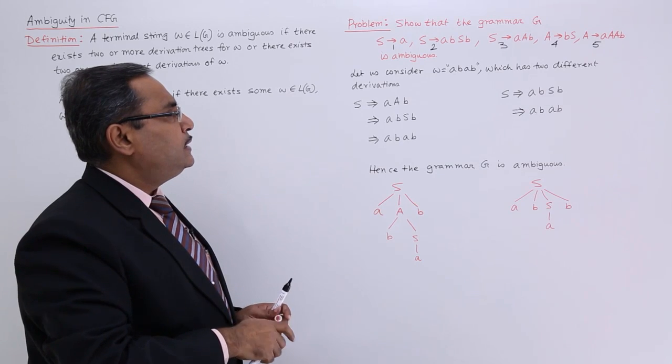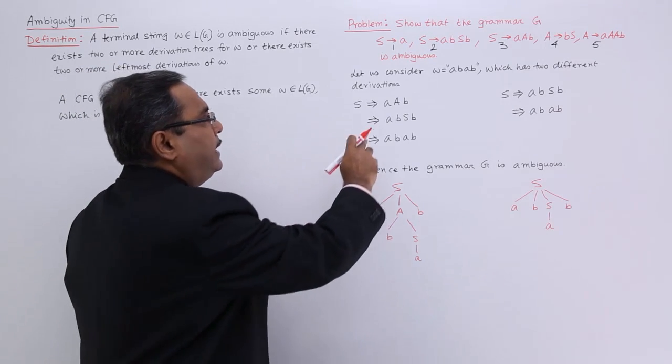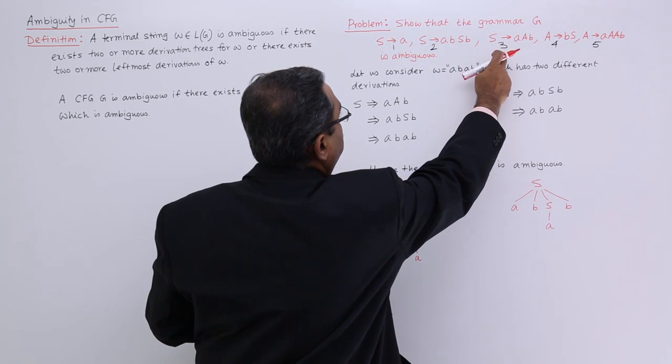At first I am starting with S. S produces aAB, that means which production rule I have used: 3.